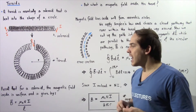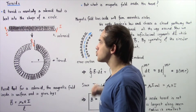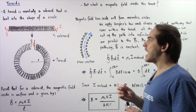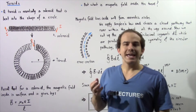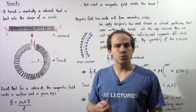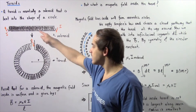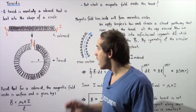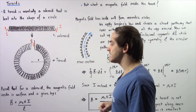In our discussion on the solenoid, recall that the magnetic field inside forms straight lines. This implies that the magnitude of the magnetic field at the center of the solenoid is approximately uniform — it's constant — and it's given by the equation derived in the previous lecture: the magnitude of the magnetic field equals the permeability of free space μ₀, multiplied by N the number of loops, multiplied by I the electric current, divided by L the length of the solenoid.